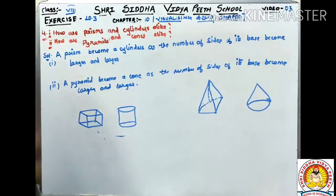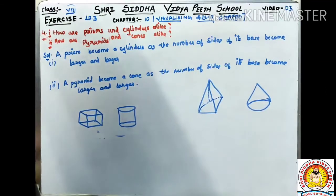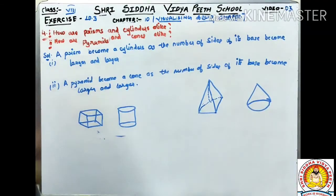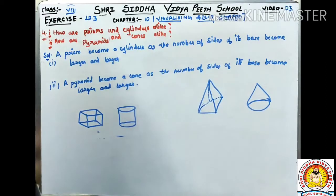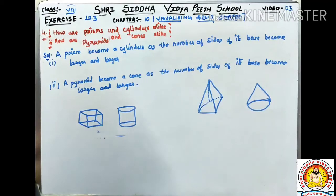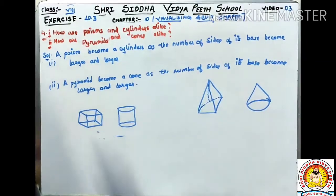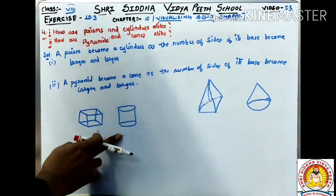Question Number 4. How are Prisms and Cylinders alike? Prisms and Cylinders are like this — they share a similar relationship. Now we will see Prism and Cylinder: Prism and Cylinder are like this.